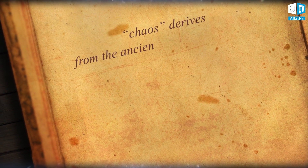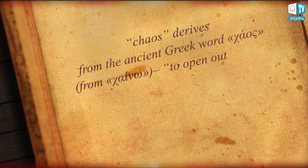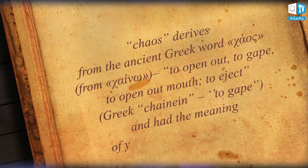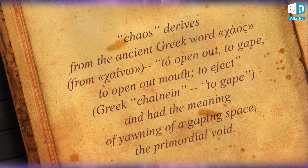In ancient Greek literature about the creation of the world, the personification of the initial state of the world before the structured universe — the cosmos — appeared was chaos. Though the initial word chaos had quite another meaning, different from the modern one. The word chaos derives from the ancient Greek word meaning to open out, to gape, to open out one's mouth, to eject.